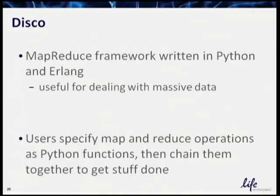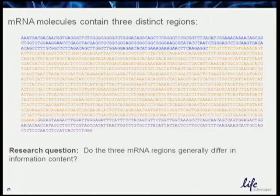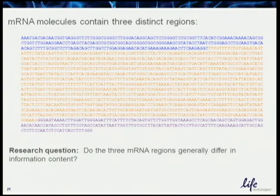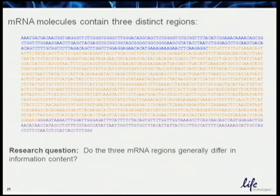DISCO is a MapReduce framework written in Python — you can specify your MapReduce operations as Python functions and then chain them together. The biological problem I applied it to: each mRNA molecule has three distinct regions — the coding region in the middle used to generate the protein, and upstream and downstream regions the cell uses to regulate how long the molecule persists. I wanted to know whether the information content of the coding region is more complex than the upstream or downstream sections.